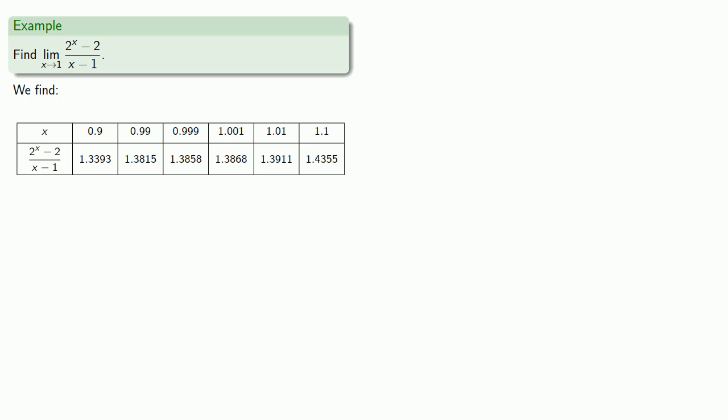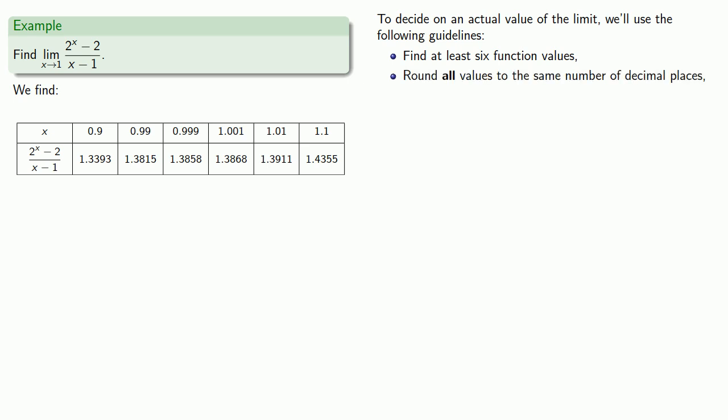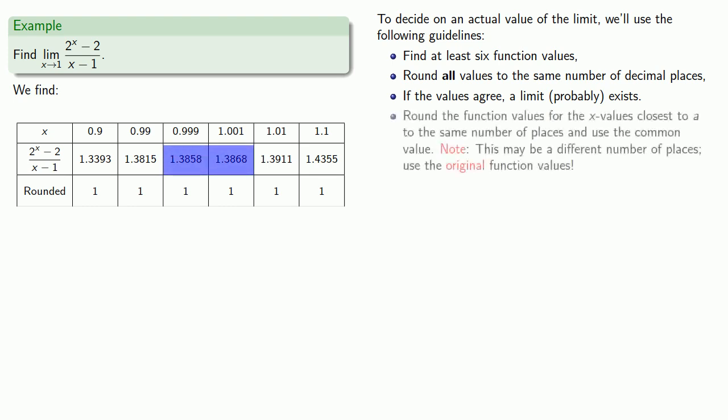And here are some guidelines that we'll use. We'll find at least six function values for values that are close to our limit point. Let's round all of these to the same number of decimal places. Now the number of decimal places we round to is going to vary. So that's where the artistry comes in. But if we round all of these values to the nearest whole number, it turns out they're all equal to 1. If all of these rounded values agree, then a limit probably exists. And at that point, we take a look at the two values that are closest to the limit point, and we round those two values, not the rounded values but the original values, to some number of decimal places and keep the maximum number of places that agree.